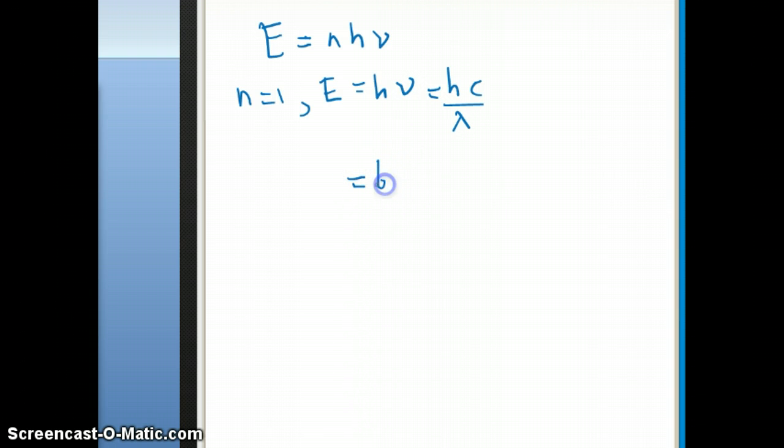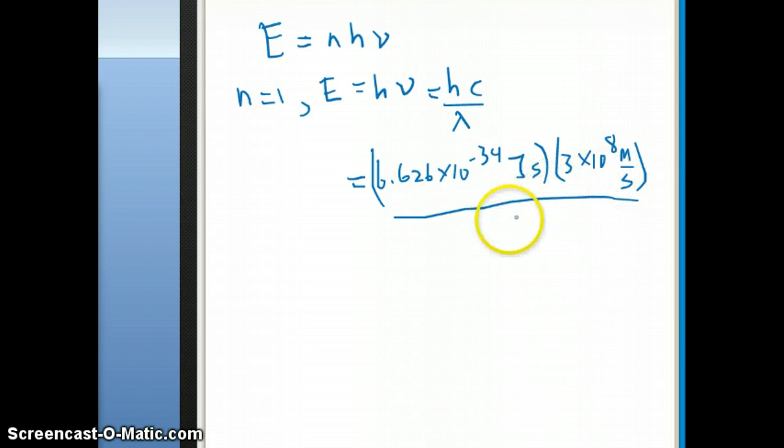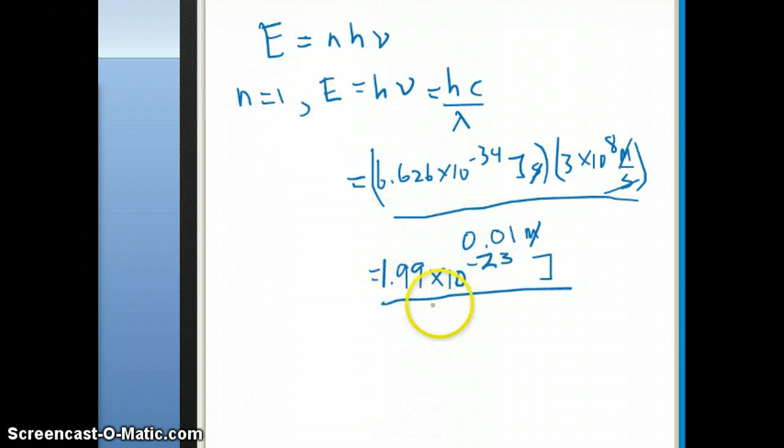And then we just plug in some number here. 6.626 times 10 to the minus 34 joule second, remember, is the unit of Planck's constant. That's what it was. And then speed of light is 3 times 10 to the 8. And remember, this is in meters per second. And then our lambda here, the wavelength that's given is 1 centimeter, which is of course 0.01 meter. I want to write it in meter because I already have a meter here, so I can cancel this meter with that meter. I can cancel the second with that second. So you see that in the end, I have a unit by dimensional analysis. My answer is in joules. And if I calculate this, I should get a value of 1.99 times 10 to the minus 23rd joules. And again, this is if n is equal to 1.